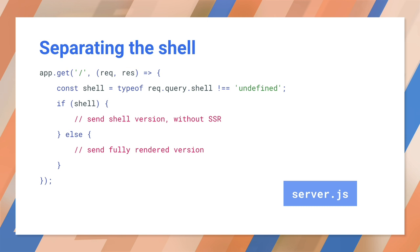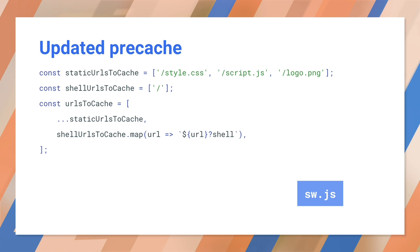Now to fix this, we need to distinguish on our server between the shell and the fully server-side rendered content, known as SSR. In this example, we're going to use a query parameter. For our sample app, we update the server to send the original non-SSR shell when we have the shell query, and to send the fully SSR version otherwise. In our service worker, we're going to pre-cache the same assets, but this time we append the shell query string to our shell resource.